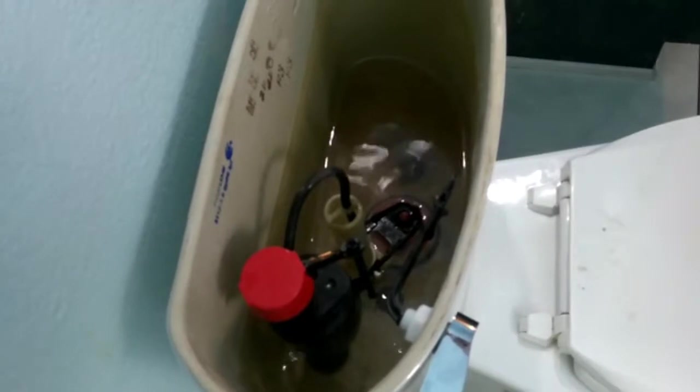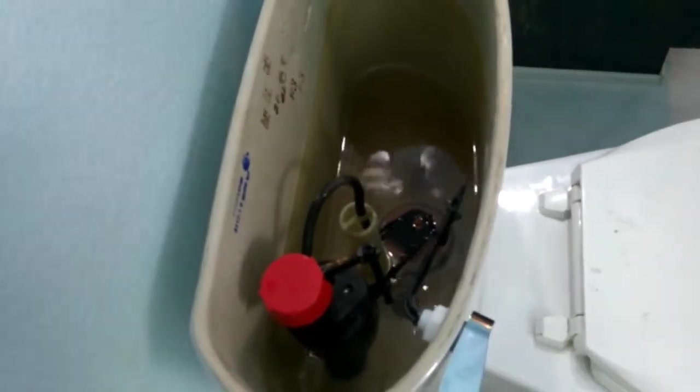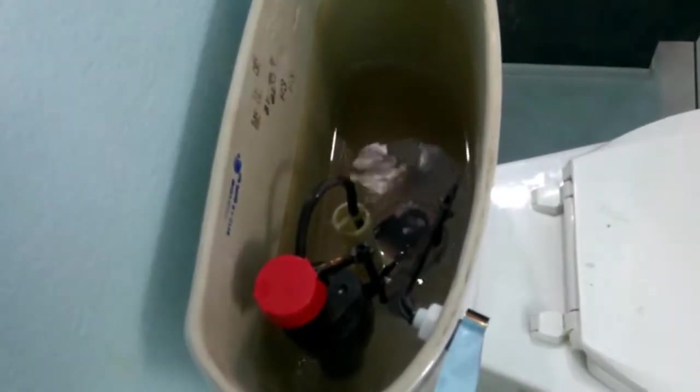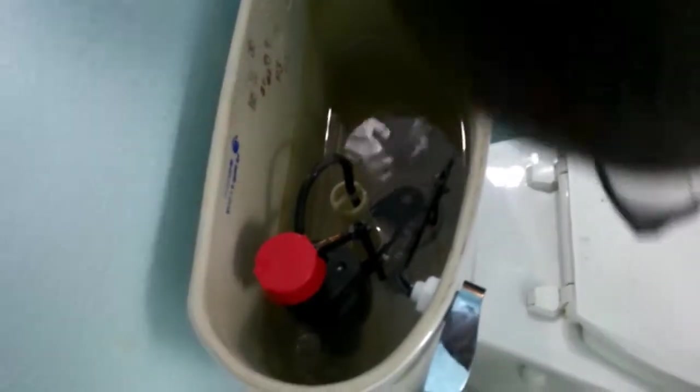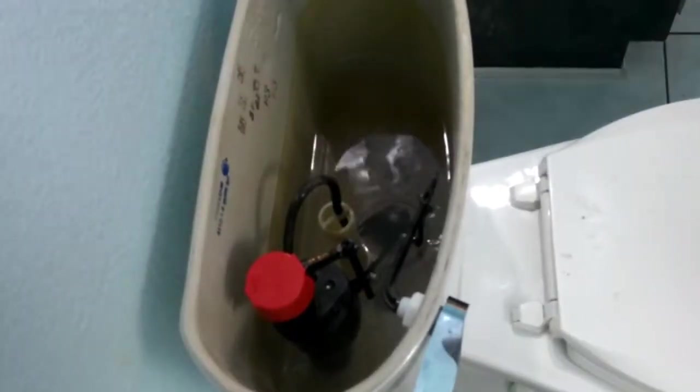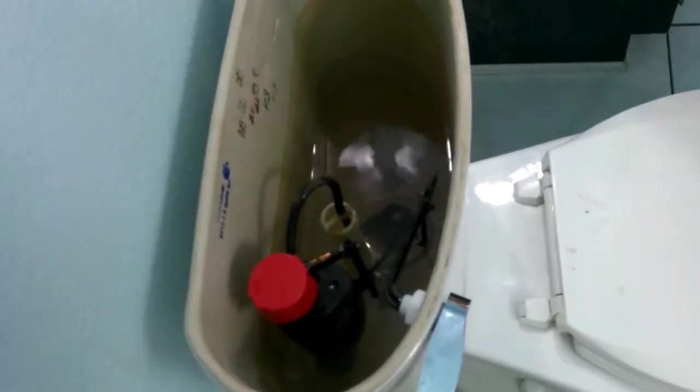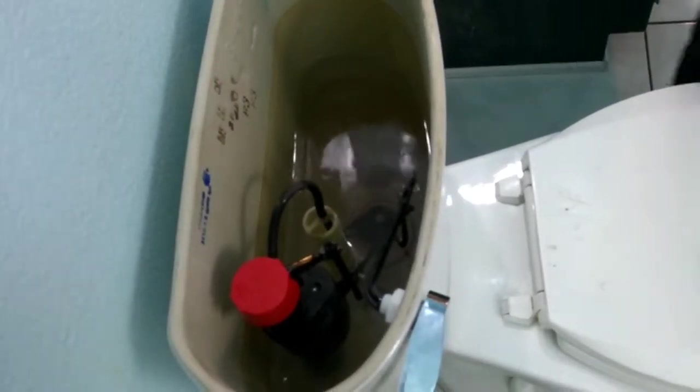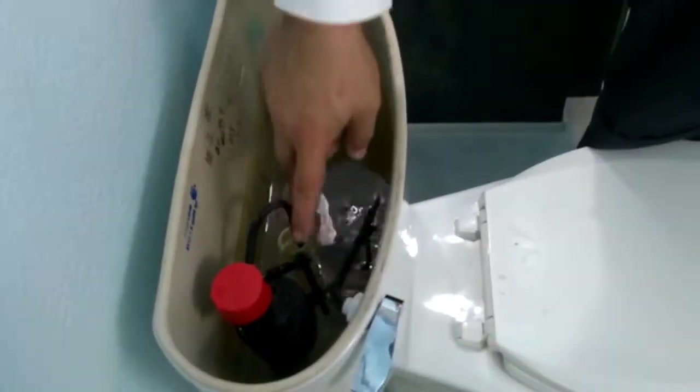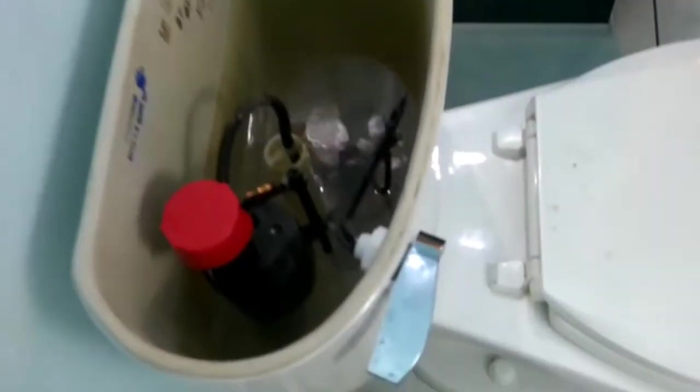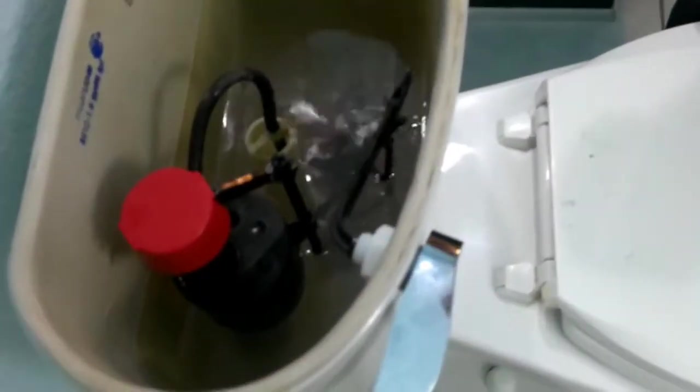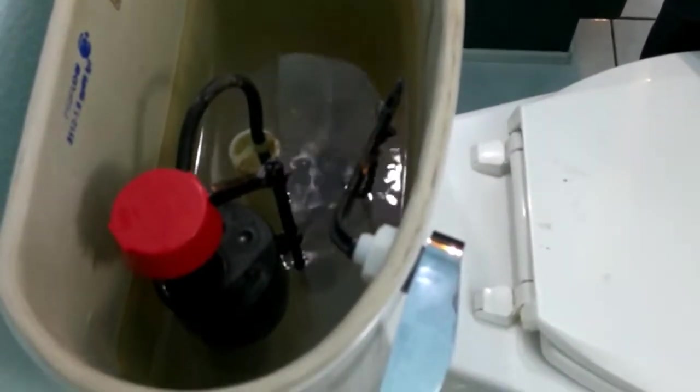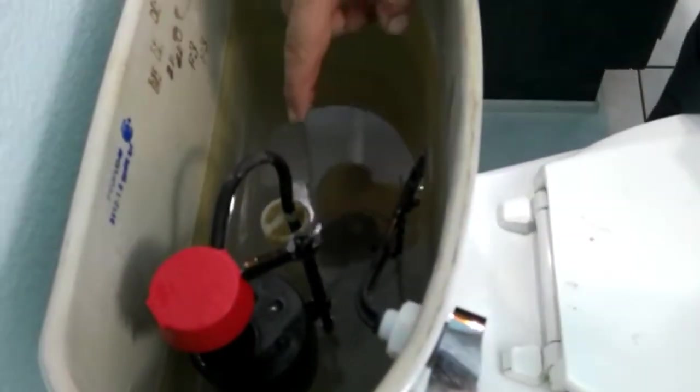What we're doing now is we're allowing this to fill up to see what level the float is going to stop at. What you're going to need to do the adjustment is a Phillips head screwdriver. You want it to stop below this level right here, otherwise the water is just going to pour in.